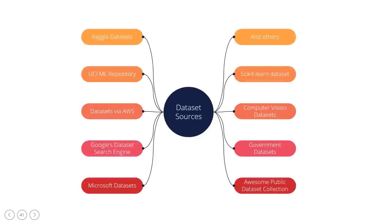Sources of machine learning datasets: we cannot train machine learning models without datasets, so how can we get them? Collecting data and preparing the dataset are very time-consuming tasks. The following is a list of popular machine learning dataset sources: Kaggle datasets, UCI Machine Learning Repository, Datasets via AWS, Google's Dataset Search Engine, Microsoft Datasets, Awesome Public Dataset Collection, Government Datasets, Computer Vision Datasets, and Scikit-Learn Dataset.